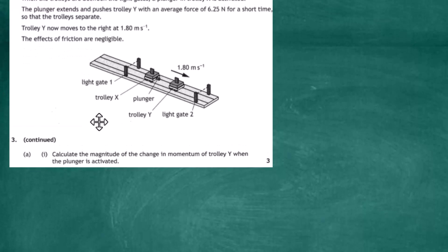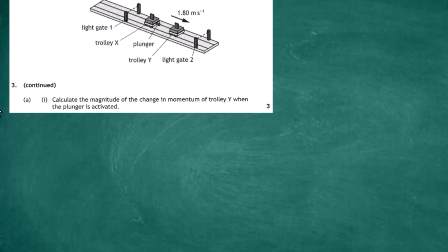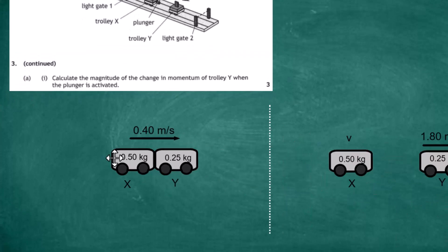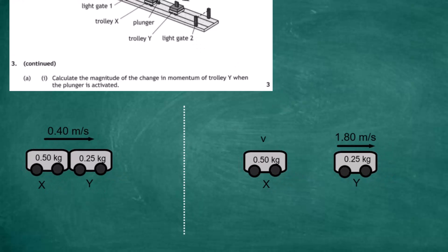The question asks us to calculate the magnitude — that is, the size — of the change of momentum of trolley Y when the plunger is activated. Since we have a complicated situation with a lot of information, it's always better to draw a diagram of what has taken place. We set up a before-and-after diagram: before the plunger is struck, both trolleys move together at 0.4 meters per second.